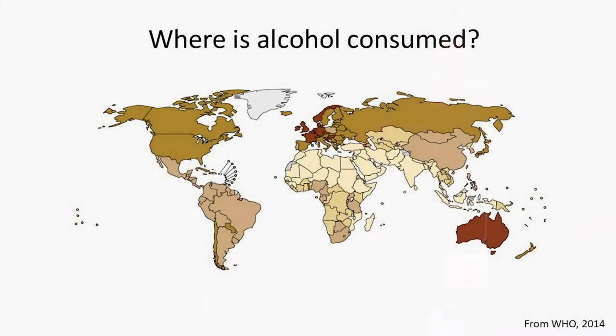I teach a class in behavioral genetics, and usually when I introduce a new disorder like schizophrenia, depression, or alcohol use disorder, I like to talk about the epidemiology or the geographic distribution of the prevalence of the disorder around the world. For addictive disorders — all addictions, actually — you see much more geographic variation than pretty much any other disorder like schizophrenia or depression, and that's a major clue that genes can't tell the whole story and that the environment is very important.